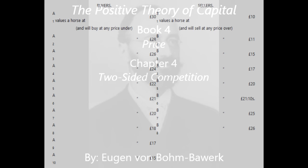Very closely related to the grounds on which are decided the successful competitors in the struggle of competition are, secondly, the grounds on which is decided the market price that results from this struggle. This price, to recur to our illustration, cannot in any case be higher than the valuation of A5, nor less than that of B5. Otherwise, the fifth buyer in the one case and the fifth seller in the other would not have come to terms. But again, the price cannot in any case be higher than the valuation of B6, nor less than that of A6. Otherwise, in the former case, a sixth buyer would begin competing with the other five buyers, and in the latter case, a sixth seller competing with the other five sellers. The equilibrium would thus be destroyed.